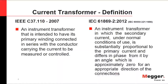The IEC definition looks more into the real operating conditions of a current transformer: an instrument transformer in which the secondary current under normal conditions of use is substantially proportional to the primary current, and differs from it by an angle which is approximately zero from an appropriate direction of connection.